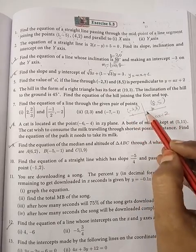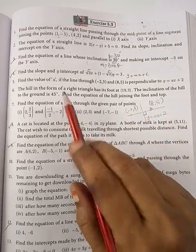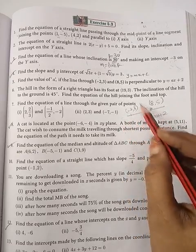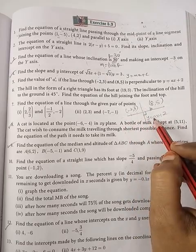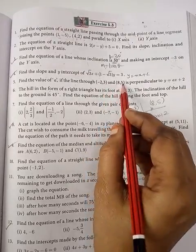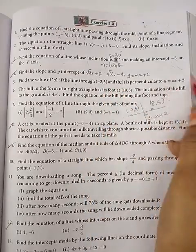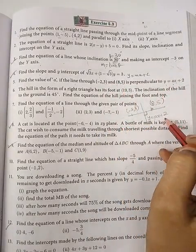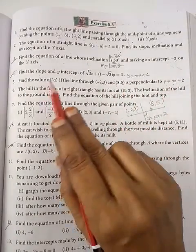This perpendicular condition, we want to find out the value of a. We will use the slope, so m1 into m2 equal to minus 1. This is the condition. So with the two points we have to calculate the slope, m1 into m2 equal to minus 1. Use this condition, you will get the value for a.